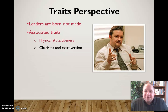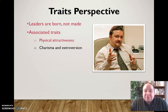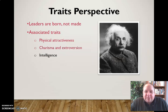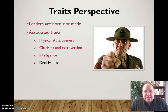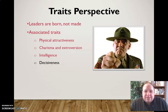We also see things like charisma and extroversion in traits perspective — that these people are born with innate charisma and the ability to draw people in, connect with people, and that they're extroverted by nature and want to be around people and lead people. They're also born with intelligence — maybe not Einstein-level, but a certain level that makes them stand out. Decisiveness — the ability to quickly make decisions and set events into motion — is also an associated trait.